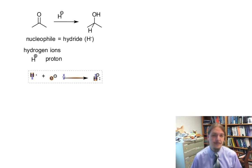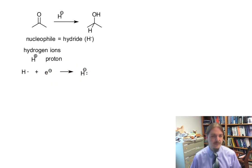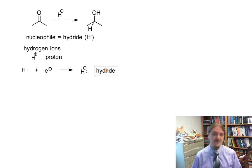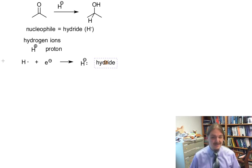So a hydride anion kind of looks like it's got the things required to be a pretty good nucleophile. It's got a lone pair, it's got a negative charge. It's on a thing that's not particularly electronegative. So it would be happier if it formed a bond.